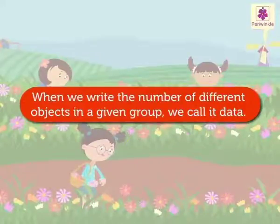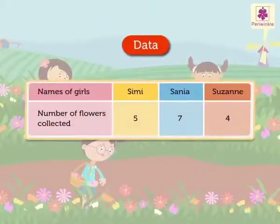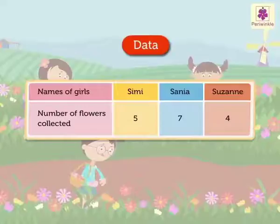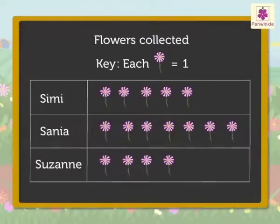The data given in the flower farm example can be represented as follows. This data can also be represented by drawing pictures. It is called a PICTOGRAPH.